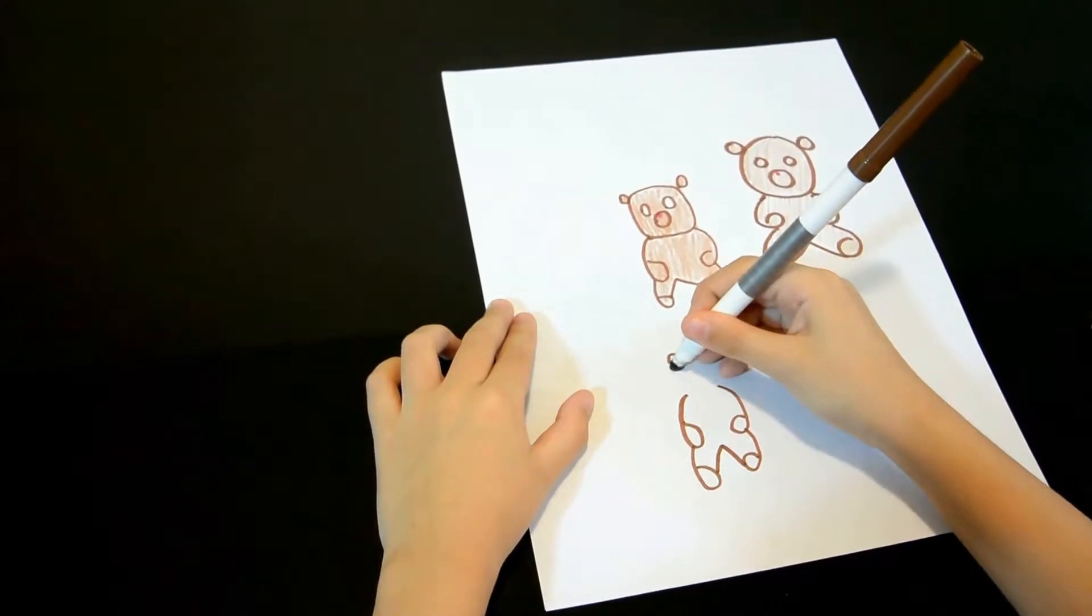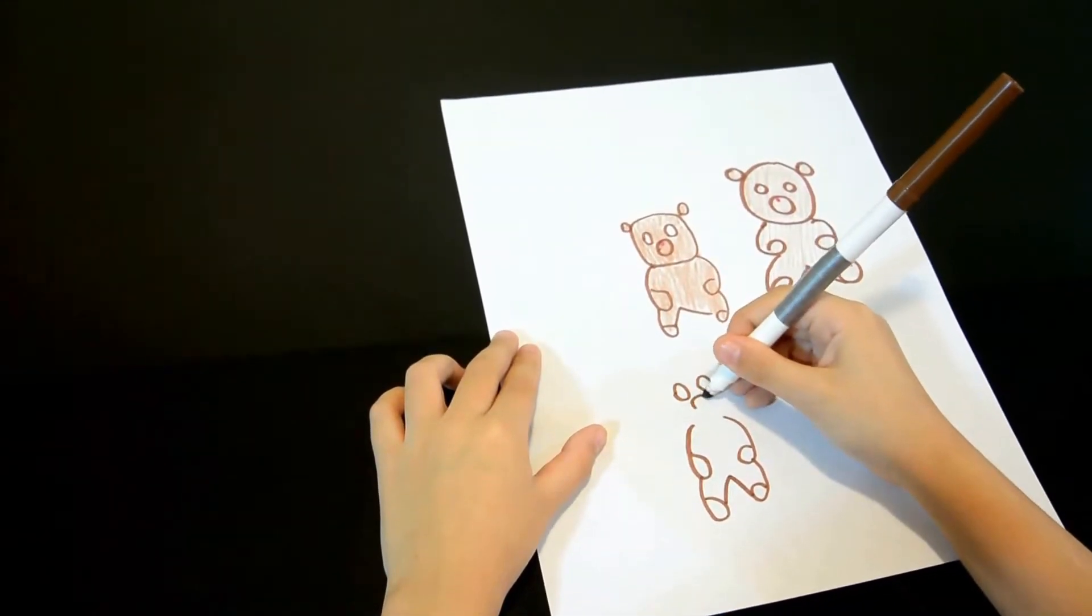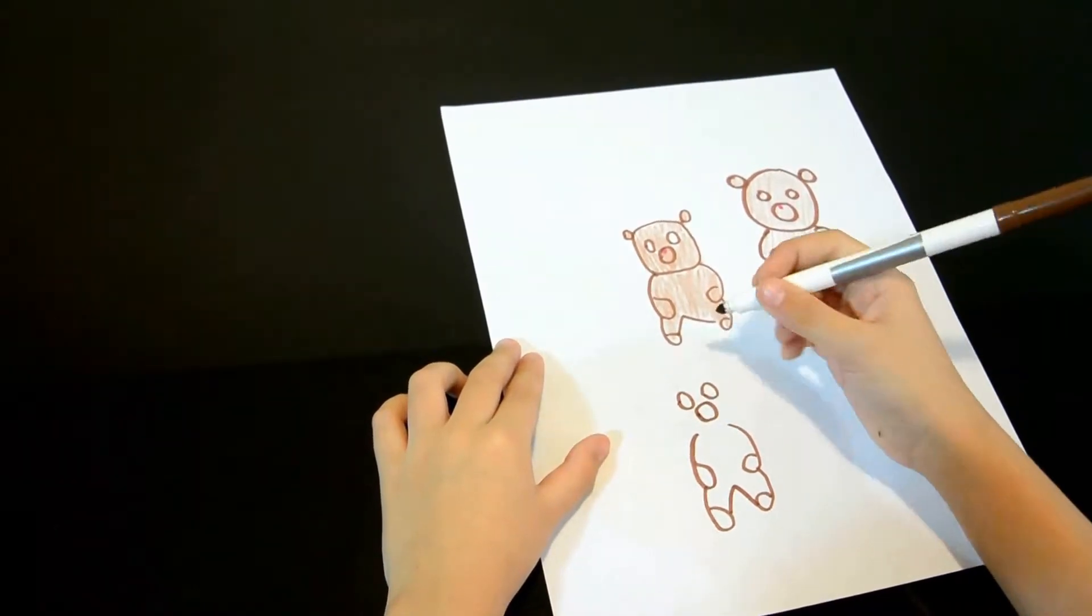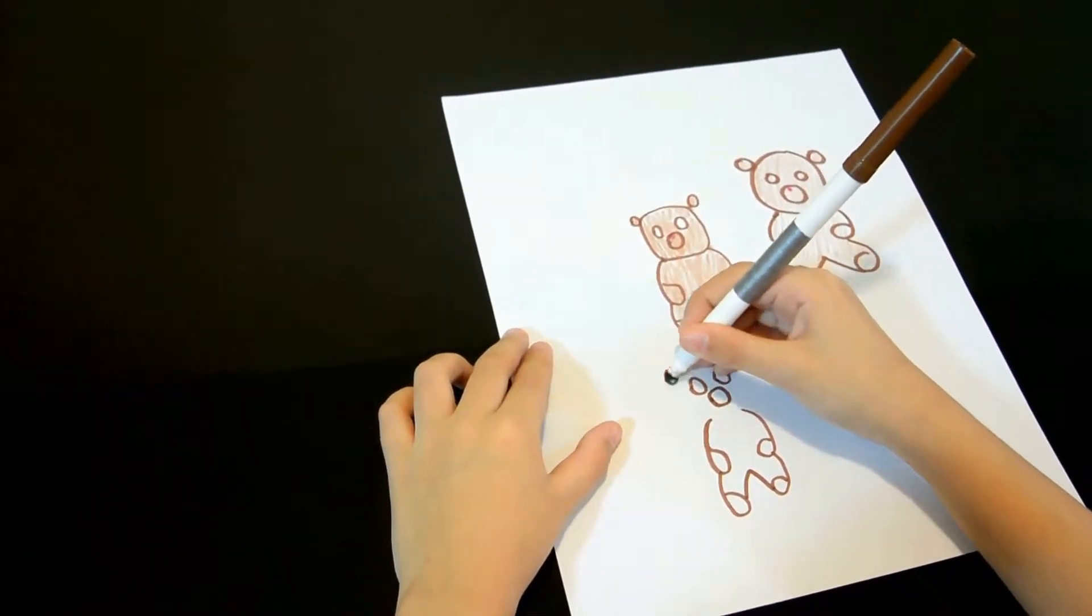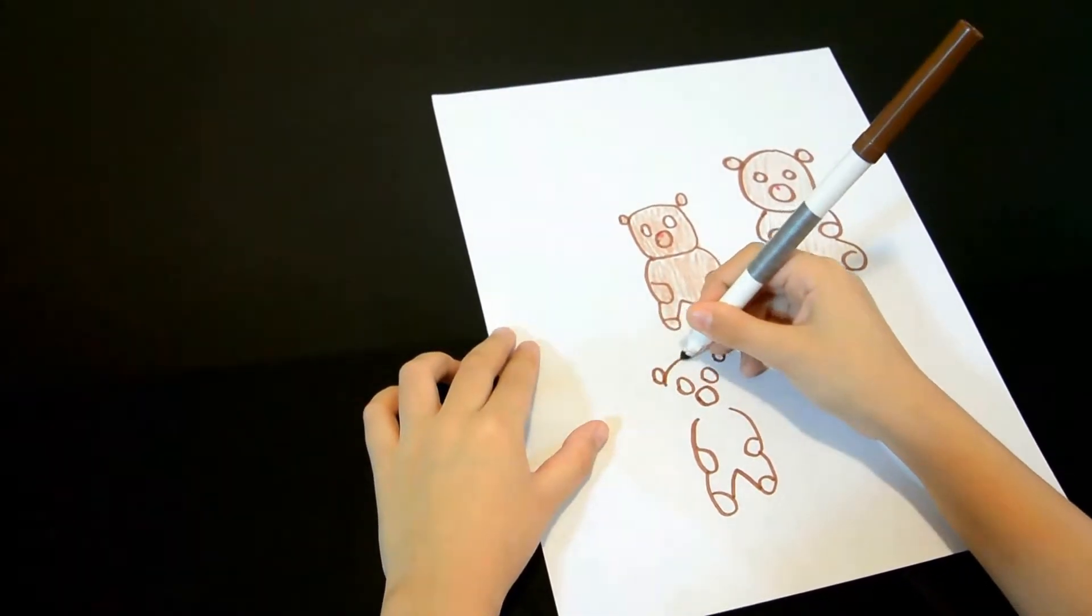Small circle, small circle, big circle. Small circle, small circle, big circle.